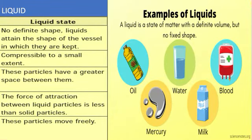Liquids have no definite shape. Liquids attain the shape of the vessel in which they are kept. Liquids are compressible to a small extent. Liquid particles have a greater space between them. Particles are not tightly packed and are free to move. The force of attraction between liquid particles is less than that of solid particles.